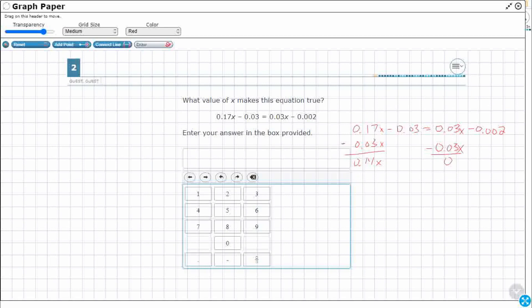So, that's your zero. We're going to bring our constants down here. Now we just have this -0.03 and then we've got the -0.002.